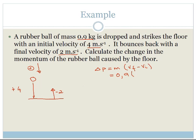Which becomes 0.9 times minus 6, which becomes minus 5.4 kilograms meters per second. But what does this minus mean?